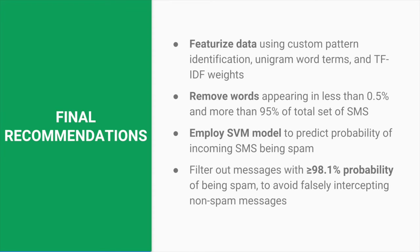Therefore, our final recommendations for building our spam filter are: first, featurize the data using a combination of customized pattern identification, unigram word terms, and TF-IDF weights; second, remove any words that appear in less than 0.5% and more than 95% of the total set of SMS messages; third, employ an SVM model to predict the probability of incoming SMS being spam; and finally, filter out messages with more than 98.1% probability of being spam to avoid falsely intercepting non-spam messages.